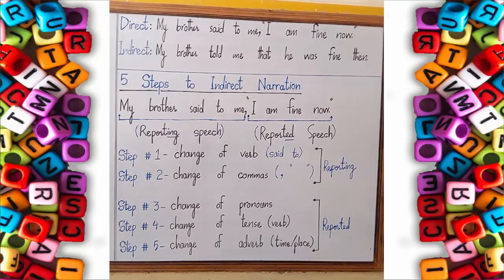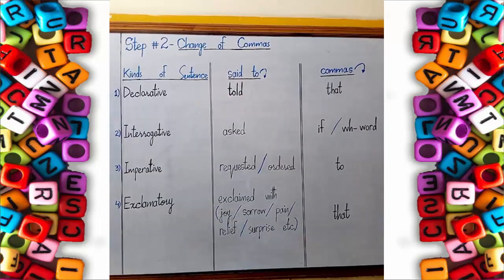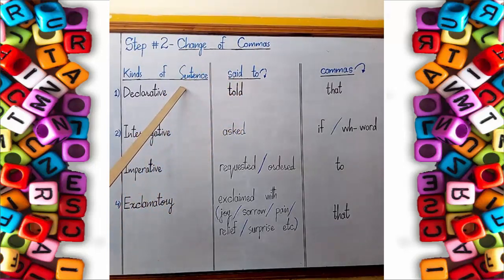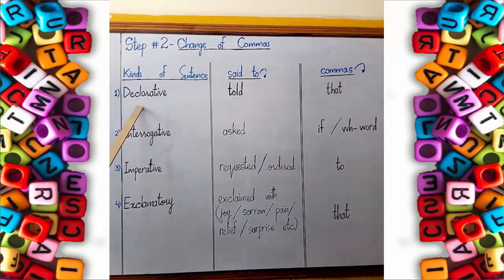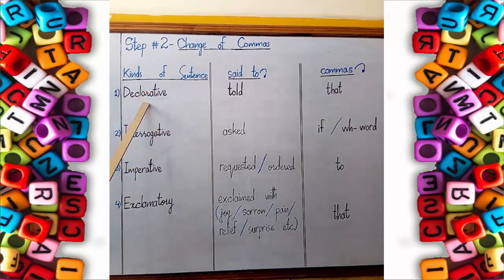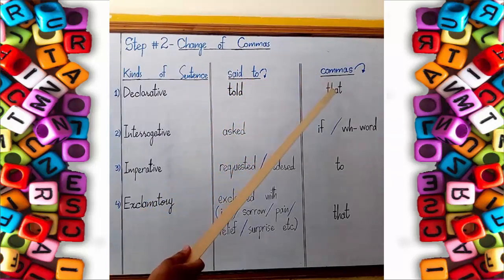Now we are going to learn about the second change: change of commas. I will explain Step 2 with the help of the same figure from Step 1. The change of commas also depends upon the kind of sentence we have in the reported speech. If a declarative sentence is given in reported speech, the commas are changed into 'that' — same as 'said to' changed into 'told'.